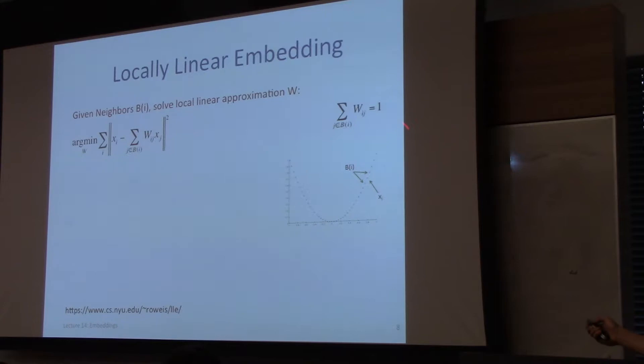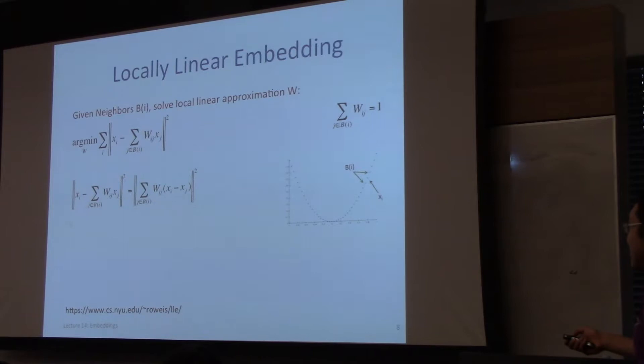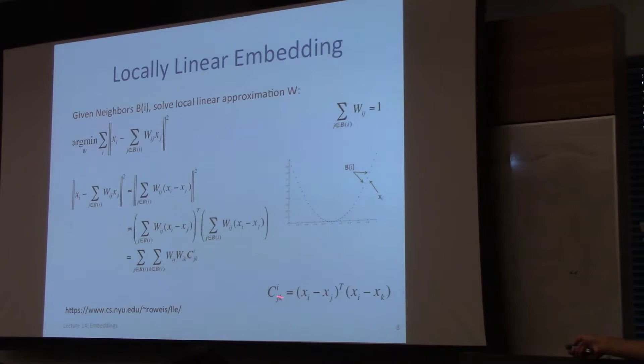With a bit of algebra, since the weights sum to one we can move this inside the summation. This equals the transpose form, and this formula involves matrix C, which can be pre-computed because the X's are given. After pre-computing the C's, this is all we have to solve, for every i.